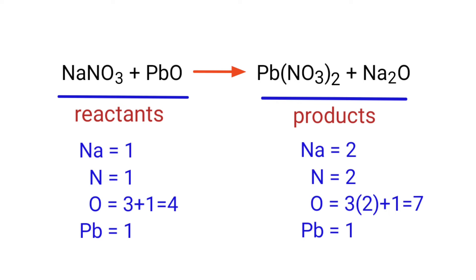The number of atoms are not balanced on both sides. To balance the chemical equation we need to make use of coefficients. A coefficient is a number that we place in front of a chemical formula.